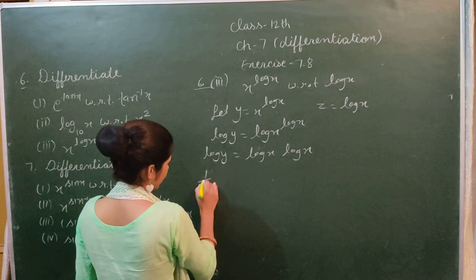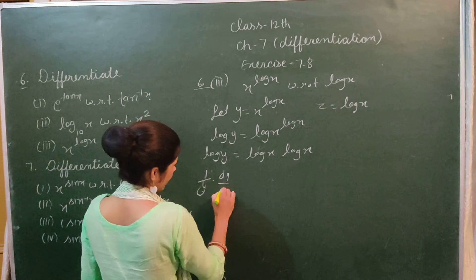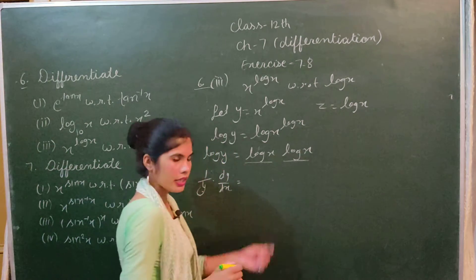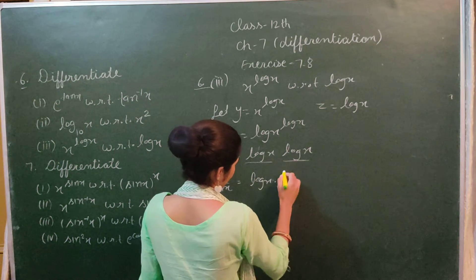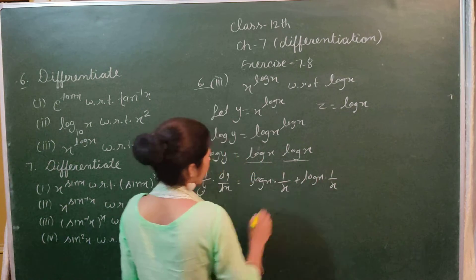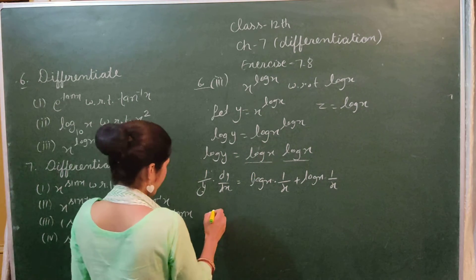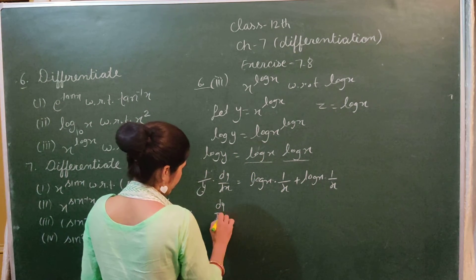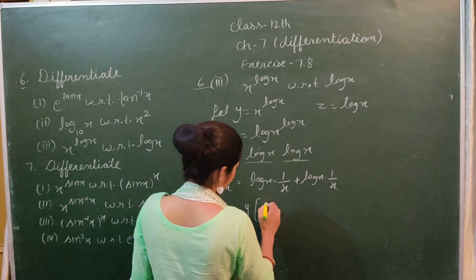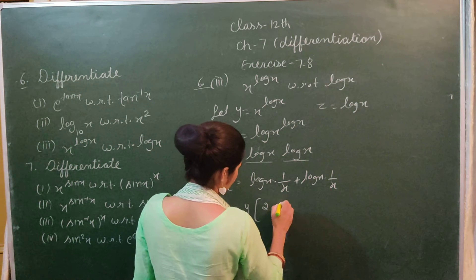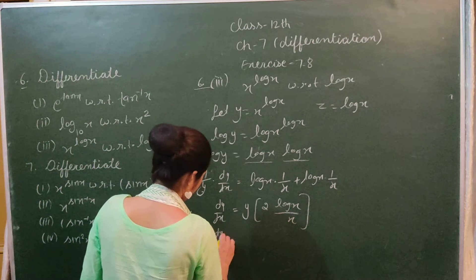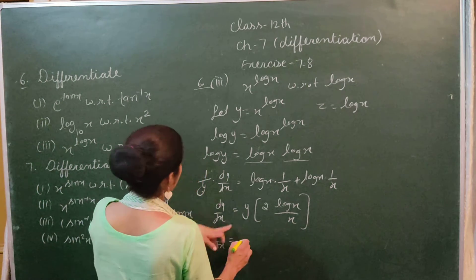Differentiating with respect to x, we get (1/y)(dy/dx). Applying the product rule on (log x)²: we get 2 log x times (1/x). Therefore dy/dx = y times (2 log x / x).